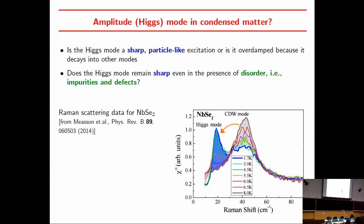The first question is whether this Higgs mode in a condensed matter system is actually a sharp particle-like excitation or whether it is overdamped, since it can potentially decay into the gapless Goldstone modes. For clean systems, this question has been answered: you do get a sharp particle-like excitation. But we have a disordered system, so the question is what happens to this mode in the presence of disorder, and in particular as we approach a disordered quantum phase transition.